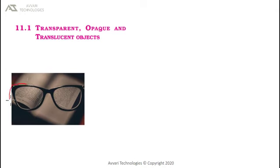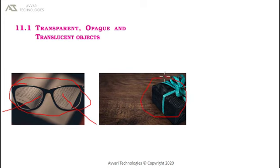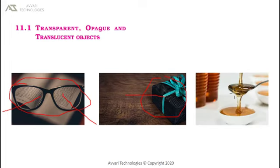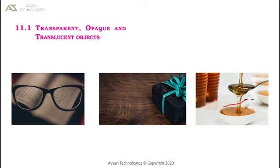Such objects are known as translucent objects. This is an example of a transparent object, where light passes through the glass. This is an example of an opaque object — can you guess what's inside the box? No, you cannot. You have to open the box to see what's inside it. Light cannot pass through the object. One of the best examples of translucent objects is honey. When you pour out honey, partially you can see what's behind it — some part of light passes through the honey and some part does not.